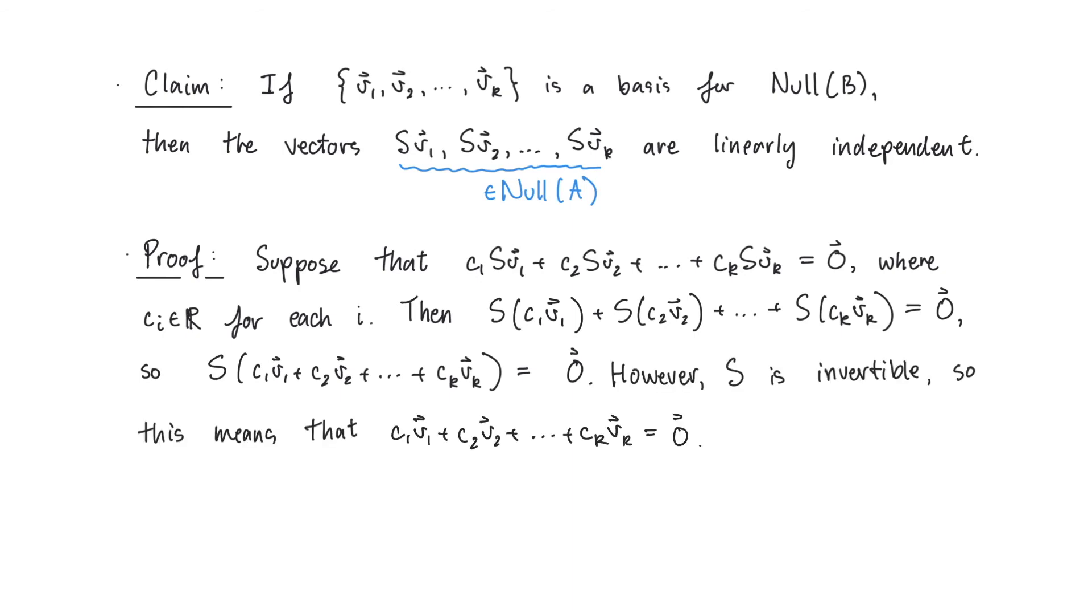But remember, S is invertible, so if we multiply both sides on the left by S inverse, we get that C1 times V1, plus C2 times V2, all the way up to Ck times Vk, is equal to 0. Since S inverse times S is the identity matrix, and S inverse times 0 is still 0.